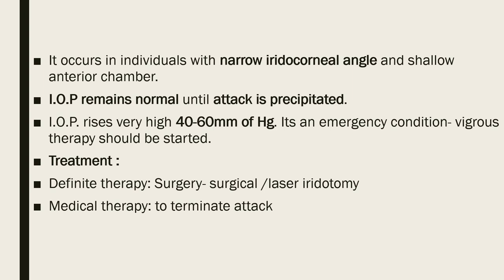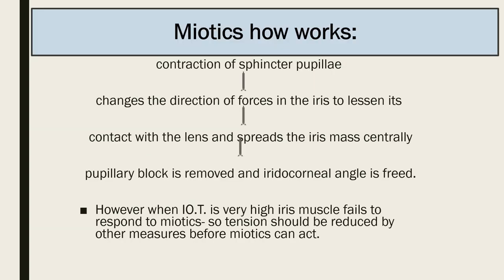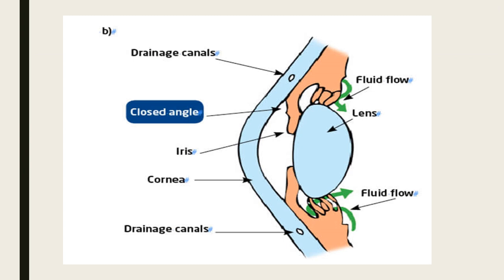Intraocular tension is raised very high to 40 to 60 mmHg — this is an emergency condition requiring vigorous therapy. Definitive treatment is surgical or laser iridotomy. Miotics work by contraction of the sphincter pupillae, changing the direction of force in the iris, lessening its contact with the lens, and spreading the iris centrally so that the pupillary block is removed and the iridocorneal angle is freed. However, when intraocular tension is very high, the iris muscle fails to respond to miotics, so tension must be reduced by other measures first.